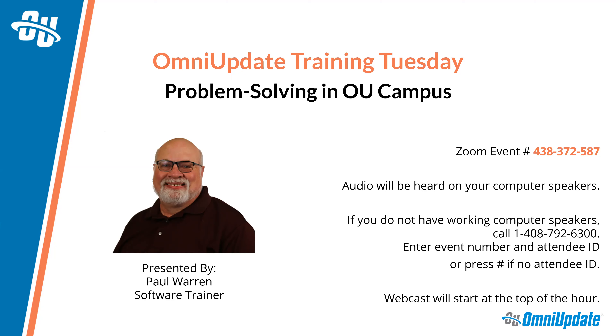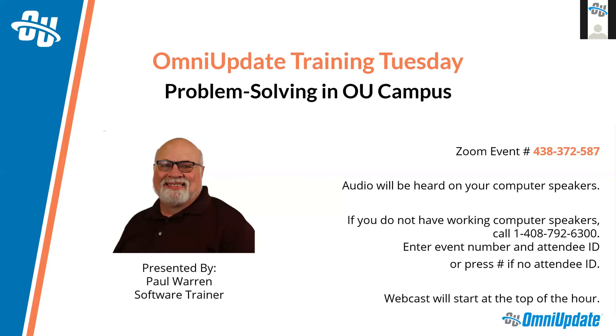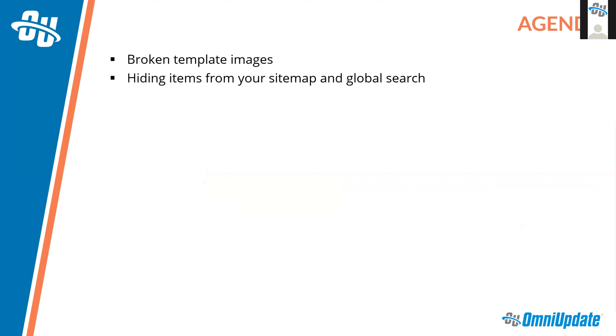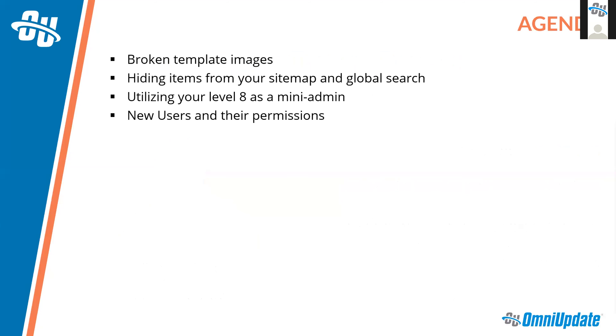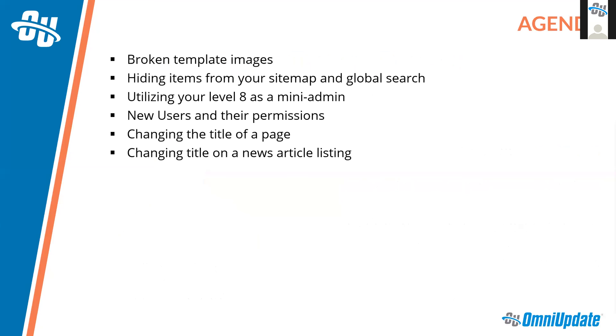Thank you, Erica. So today what we're going to be talking about is problem solving in OU Campus. On our agenda, we'll look at broken template images, hiding items from your site map and global search, utilizing your level 8 users as a mini admin person, new users and their permissions and how to make sure you're getting the right permissions for the right people, and changing the title of the page and changing the title on a news article listing.